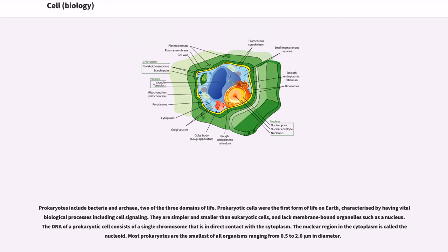Prokaryotic cells were the first form of life on Earth, characterized by having vital biological processes including cell signaling.